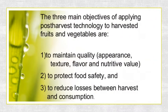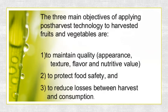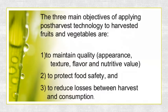There are three main objectives of implementing post-harvest technology. First is to maintain quality — meaning the appearance, texture, flavor, and nutritive value of the food item. Second is to protect food safety. Third is to reduce losses between harvest and consumption. This is the process implemented from the harvesting time until consumption, which is called the post-harvest period.